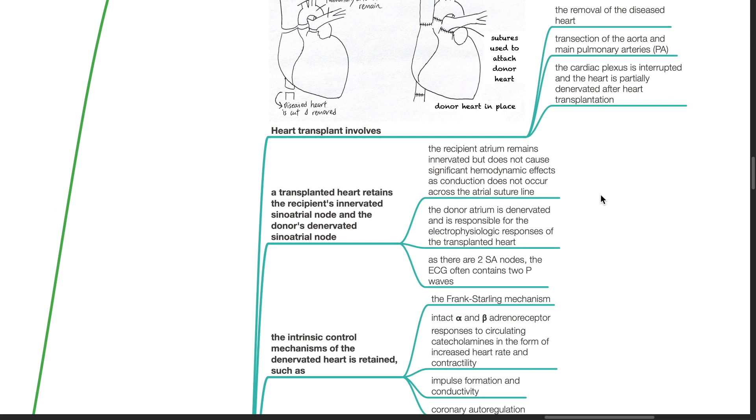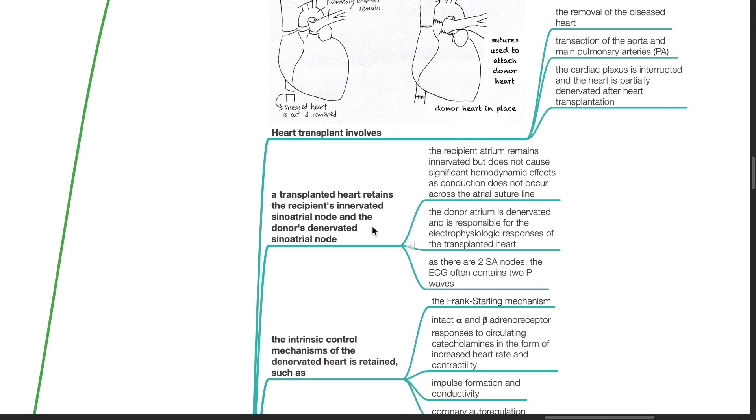A transplanted heart retains the recipient's innervated sinoatrial node and the donor's denervated sinoatrial node. The recipient atrium remains innervated but does not cause significant hemodynamic effects, as conduction does not occur across the atrial suture line.